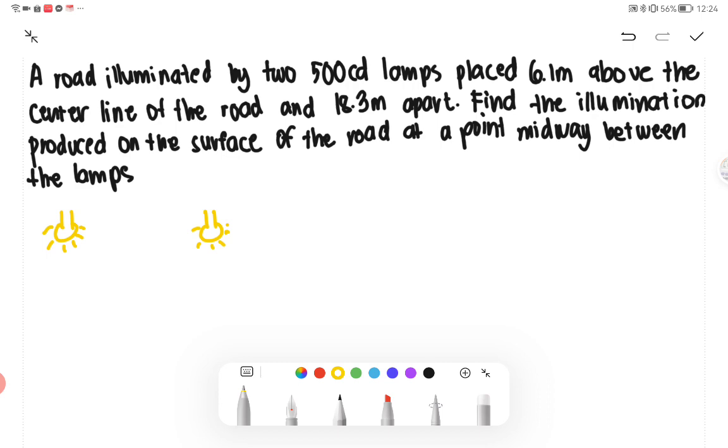We have to take note that this is an identical setup. Therefore, the illumination from lamp number 1 and then lamp number 2 is just equal. This would be our lamp number 1, and this is lamp number 2. And then, let's draw. Its distance here is the same, which is 6.1 meter. So this one is 6.1 meter as well.